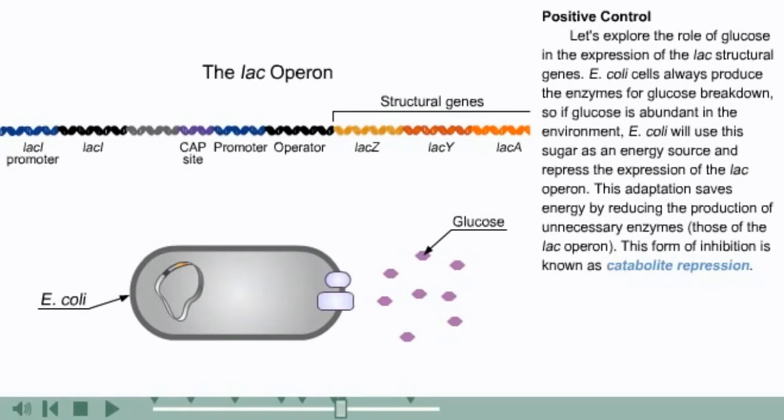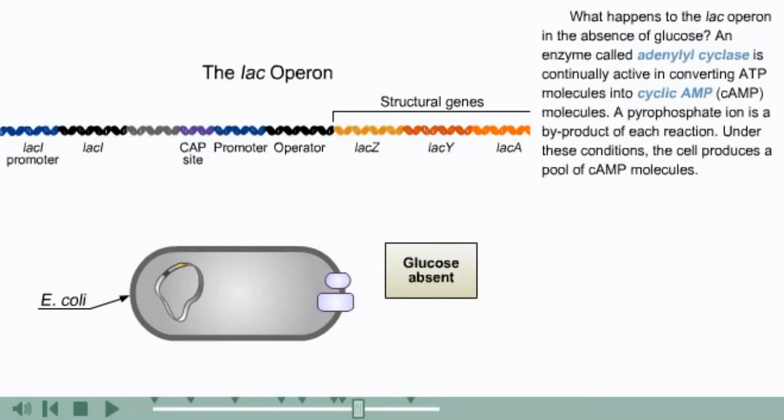Let's explore the role of glucose in the expression of the lac structural genes. E. coli cells always produce the enzymes for glucose breakdown. So if glucose is abundant in the environment, E. coli will use this sugar as an energy source and repress the expression of the lac operon. This adaptation saves energy by reducing the production of unnecessary enzymes, those of the lac operon. This form of inhibition is known as catabolite repression.